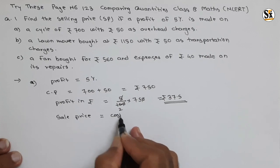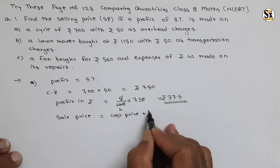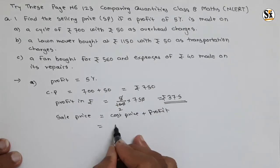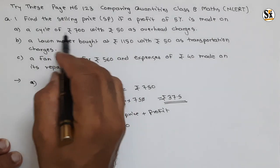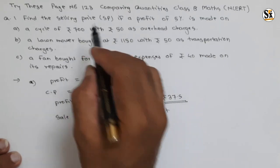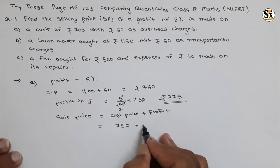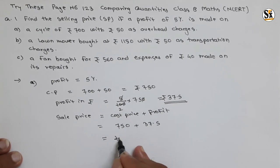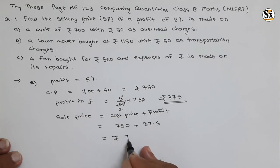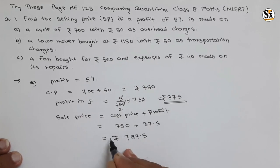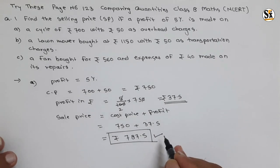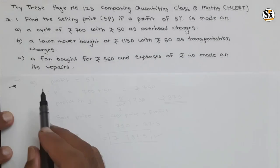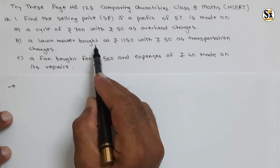Selling price is equal to cost price plus profit. The cost price is not 700 — because there are overheads — so the total cost price is 750. Plus profit is rupees 37.5. Adding these: 750 plus 37.5 gives rupees 787.5. This is the selling price for the cycle.